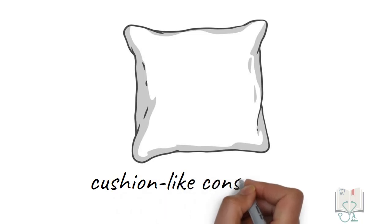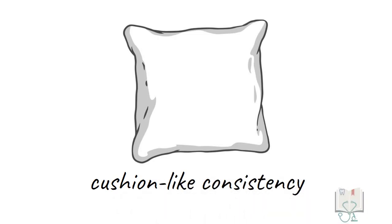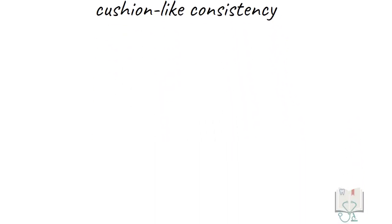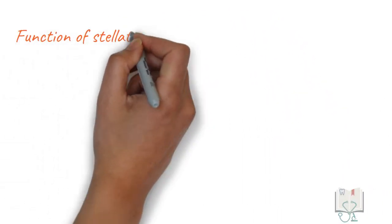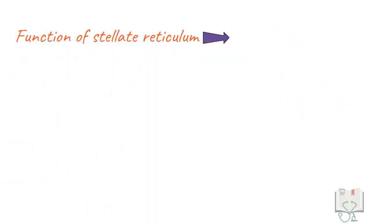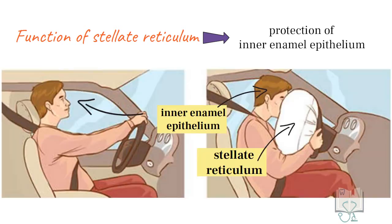The collection of water gives stellate reticulum a cushion-like consistency. Thus, the function of stellate reticulum is to protect the important inner enamel epithelium from any mechanical trauma by acting as a shock absorber.